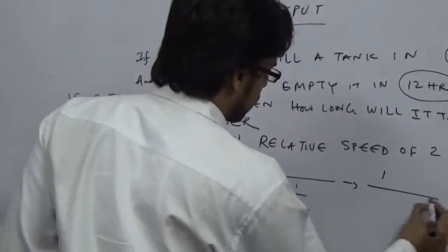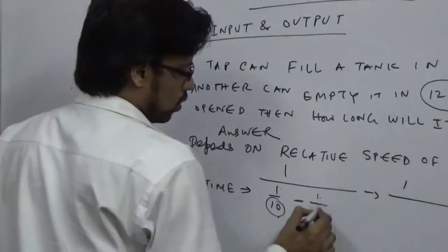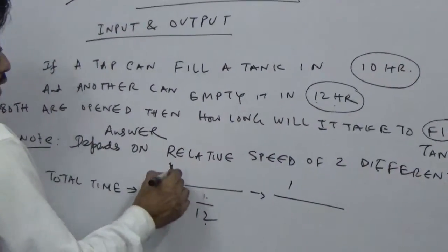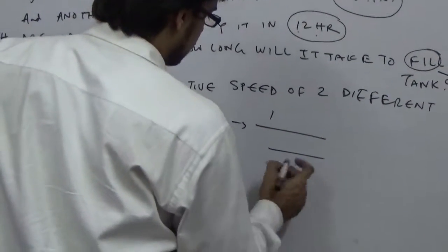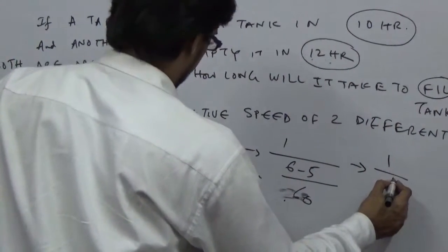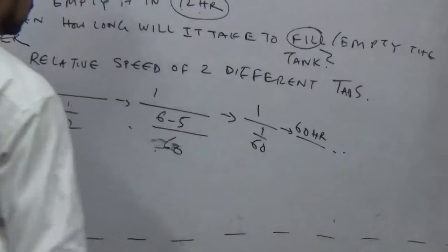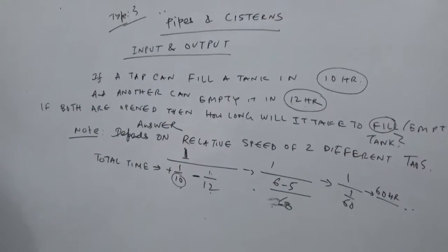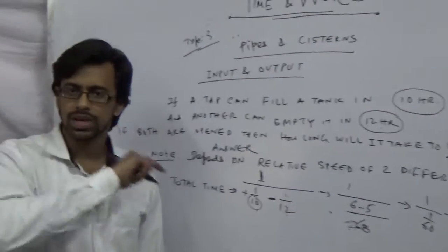Let's solve this. We come from 1 by 10 minus 1 by 12. Solving gives 1 by 60 hours. So the answer is that in 60 hours the total tank will be filled.